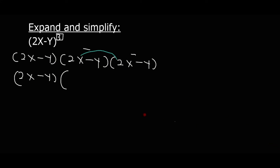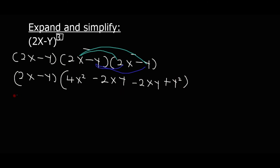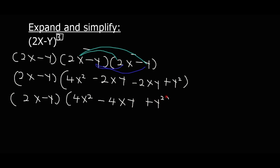So I focus on the first two brackets and multiply them: 2x times 2x is 4x squared. Then 2x times minus y is roughly minus 2xy. Then minus y times 2x is roughly minus 2xy. And minus y times minus y is roughly plus y squared. Grouping like terms: minus 2xy and minus 2xy are like terms, giving minus 4xy. So we have 4x squared minus 4xy plus y squared.